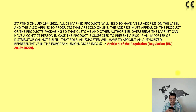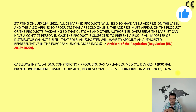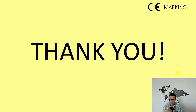Now let me give you a couple of examples of products that require the CE marking. These range from cable installations, construction products, and gas appliances to medical devices, personal protective equipment, radio equipment, recreational crafts, refrigeration appliances, and toys. This list is not exhaustive, so please check the full product group list to see all products that fall under mandatory CE marking.